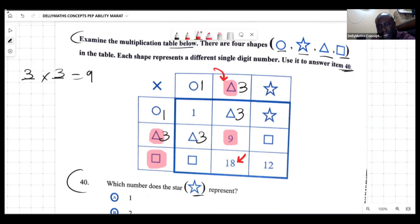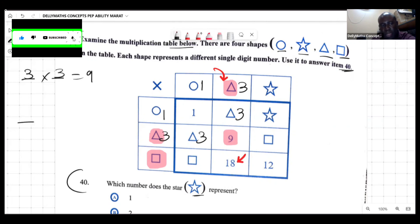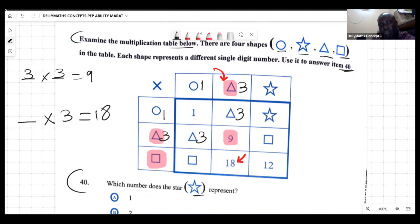I could now look at this spot here and say what multiplied by three to give me 18. So let's look at it. What times three equals 18? Well, this is six. So six times three is 18, so we're saying that the square is a six.